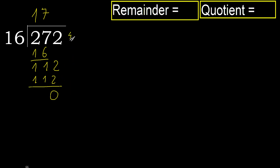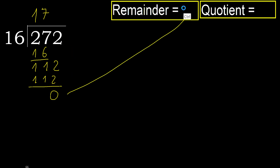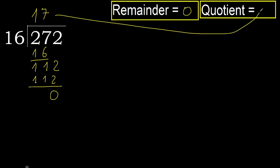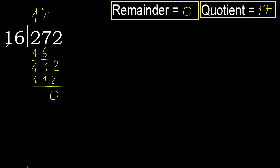Next — there is no number remaining, therefore finish. Ok, 272 divided by 16 is 17.